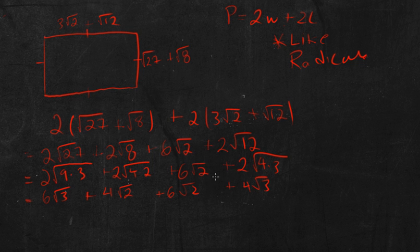So now I have this situation where I have some like radicals. So I have a root 3 and then another root 3 over here.